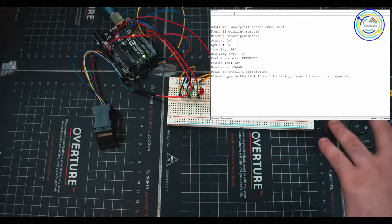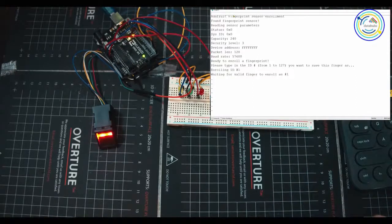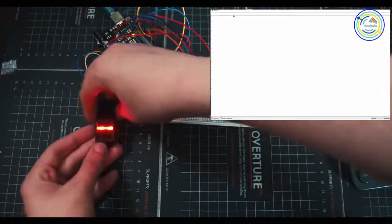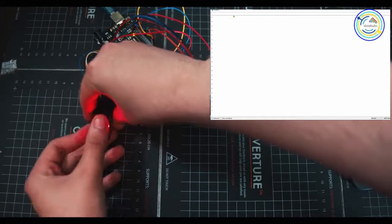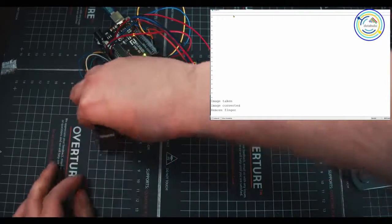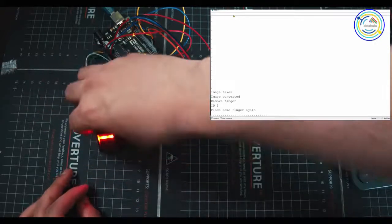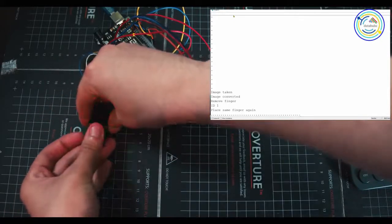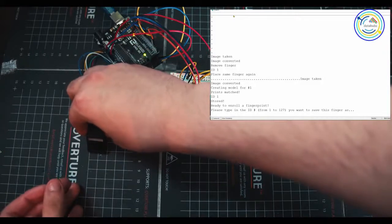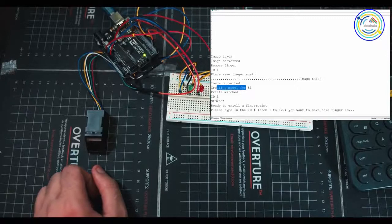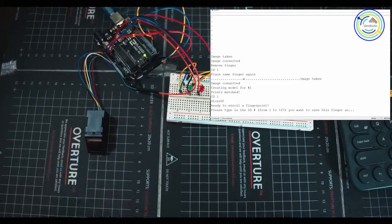We're going to go here in the top in the search bar and type in number 1, and it's going to start searching. You can see that your sensor turns on and there's a big red light. I'm going to take my finger, put it on here, hold it. We can see image taken, image converted, remove finger. Place the same finger again. We're going to pick up the sensor, try and place it in the same area.